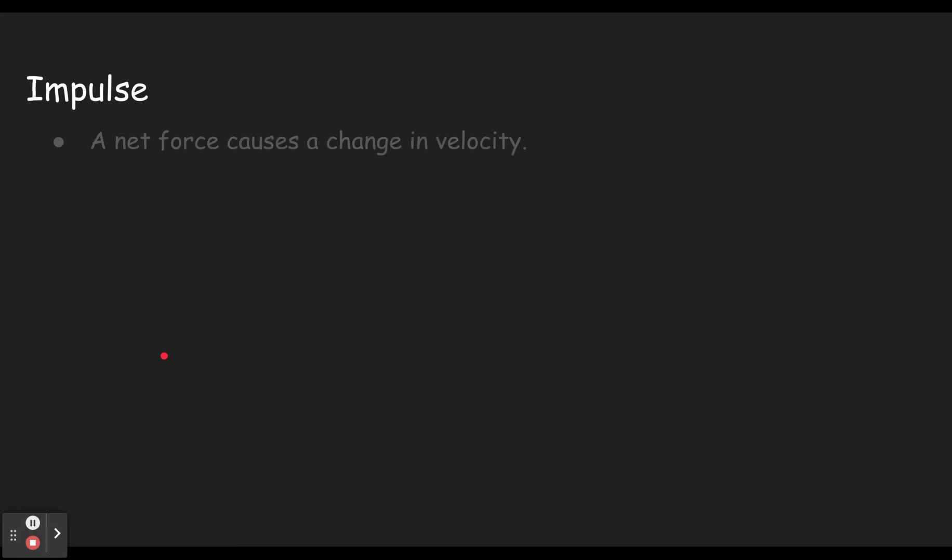So impulse is our new thing for this video. As we know, a net force causes a change in velocity, or we could say a net force causes an acceleration. In the same way, an impulse causes a change in momentum. It's really two ways of describing the same thing—that when you push on something, it starts moving or it stops moving. Speeds up, slows down. Instead of talking about it in terms of the velocity changing, we could talk about it in terms of the momentum changing. And that's going to be helpful. You'll see that more in the next couple of videos.